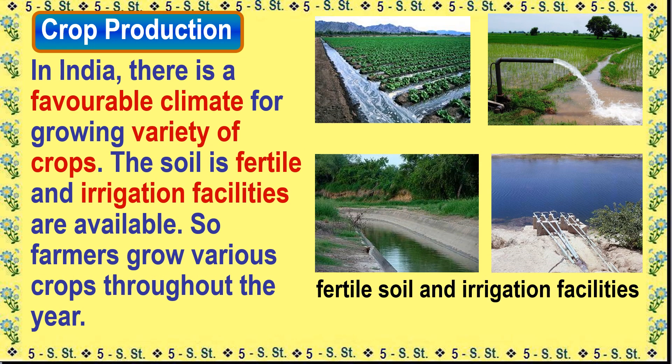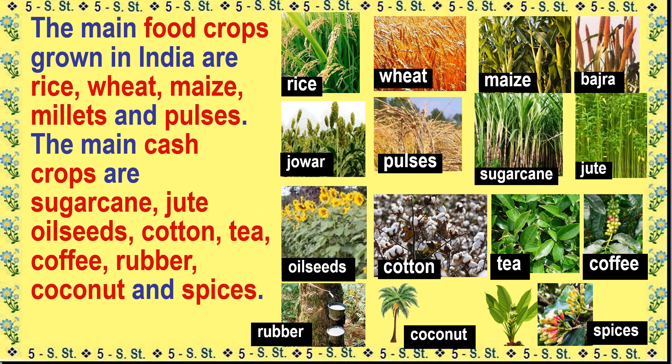Crop Production: In India, there is a favorable climate for growing a variety of crops. The soil is fertile and irrigation facilities are available, so farmers grow various crops throughout the year. The main food crops grown in India are rice, wheat, maize, millet, and pulses. The main cash crops are sugarcane, jute, oilseeds, cotton, tea, coffee, rubber, coconut, and spices.